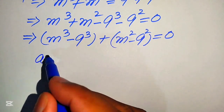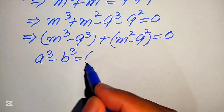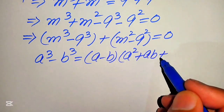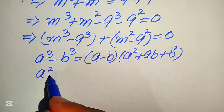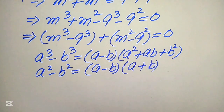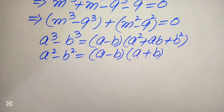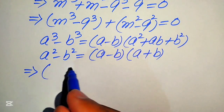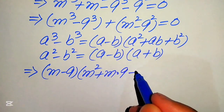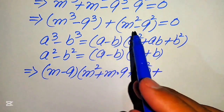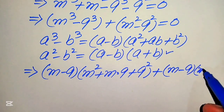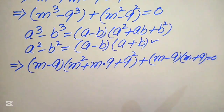For the first term we apply the cubic formula: a cubed minus b cubed equals (a minus b)(a squared plus ab plus b squared). For the second term we apply: a squared minus b squared equals (a minus b)(a plus b). After applying the cubic formula to the first term we get (m minus 9)(m squared plus 9m plus 9 squared), and applying the difference of squares formula gives (m minus 9)(m plus 9). The whole equation equals 0.